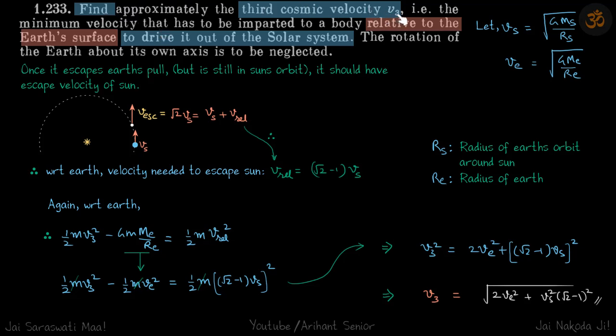Find the third cosmic velocity V3, that is the minimum velocity that has to be imparted to a body relative to the earth's surface to drive it out of the solar system. So if we launch an object from earth's surface, what is the minimum velocity that needs to be given such that the object escapes the solar system?